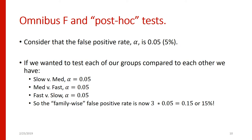When we looked at speed as a continuous variable, we didn't have this problem because there was just one parameter — a linear relationship. But now we've broken the continuous variable into three groups. If we actually want to test all the different groups relative to each other, we have a multiple testing problem because our family of tests has three different tests in it.